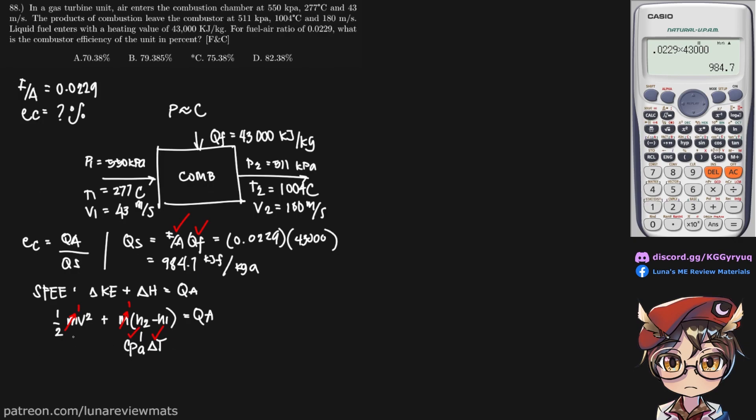So further explaining this equation, we do have a change in velocity over here. So this becomes one half v2 squared minus v1 squared plus specific heat of air times the change in temperature is equal to q sub a.